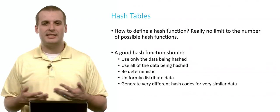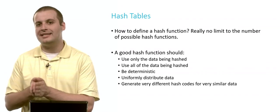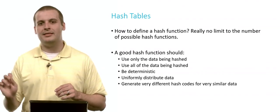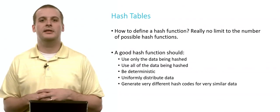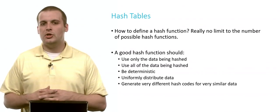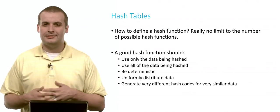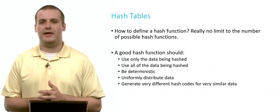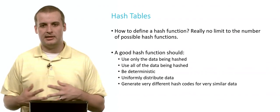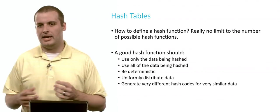A hash function should also be deterministic. What does that mean? Well, it means that every time we pass the exact same piece of data into the hash function, we always get the same hash code out. If I pass John into the hash function and I get out 4, I should be able to do that 10,000 times, and I'll always get 4. A hash function should also uniformly distribute data. If every time you run data through the hash function, you get the hash code 0, that's probably not so great, right?